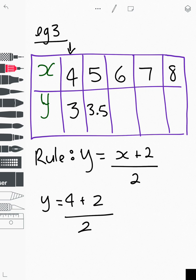Next one, 6 plus 2 is 8, 8 divided by 2 is 4. Next one, 7 plus 2 is 9, 9 divided by 2 is 4.5. And 8 plus 2 is 10, 10 divided by 2 is 5. So we're simply substituting the x value there for whatever column we're doing. Let's do our final example.